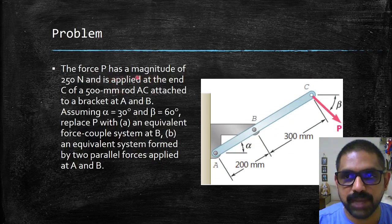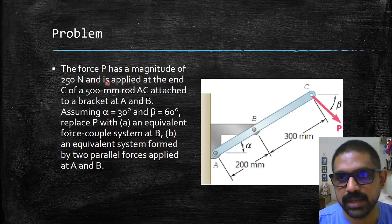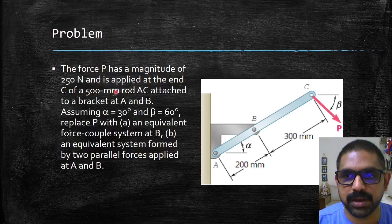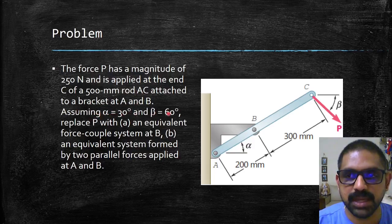The force P has a magnitude of 250 Newtons and is applied at the end C of a 500 millimeter rod AC attached to a bracket at A and B. Assuming alpha is 30 degrees and beta is 60 degrees, replace P with an equivalent force-couple system at B.